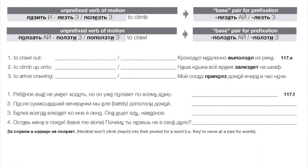A nice Russian idiom: он за словом в карман не полезет — literally he won't climb into his pocket for a word. It means someone is never at a loss for words — the word is always on the tip of their tongue, they never have to reach in and pull one out.